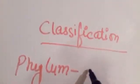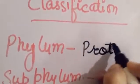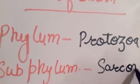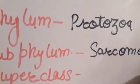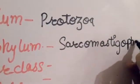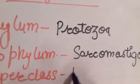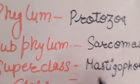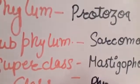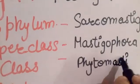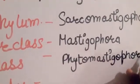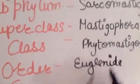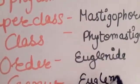Phylum is Protozoa, subphylum is Sarcomastigophora, superclass is Mastigophora, and the class is Phytomastigophora. Then the order is Euglenida, genus is Euglena, and species is viridis. Don't forget to underline the genus and species.